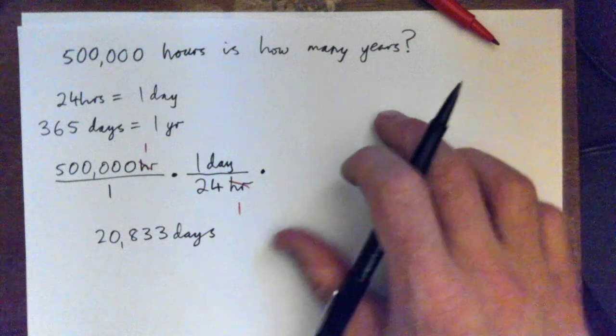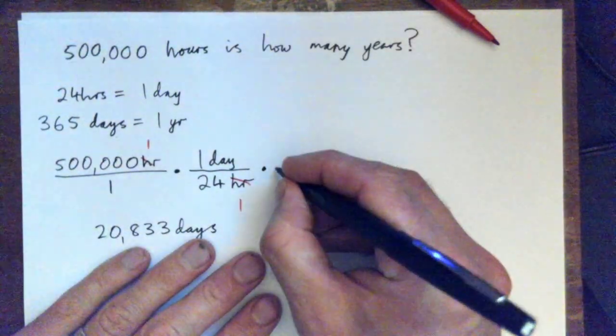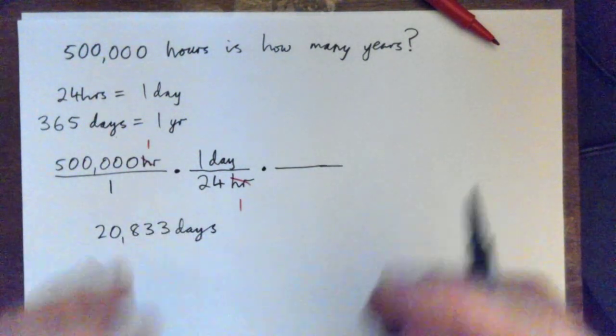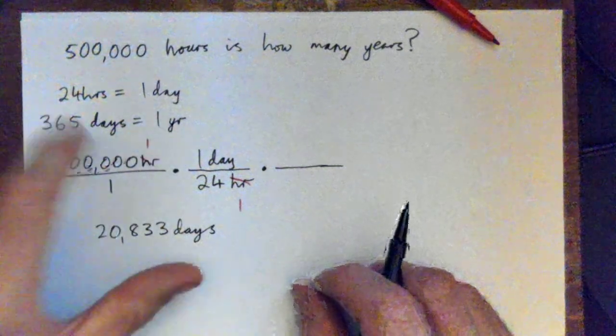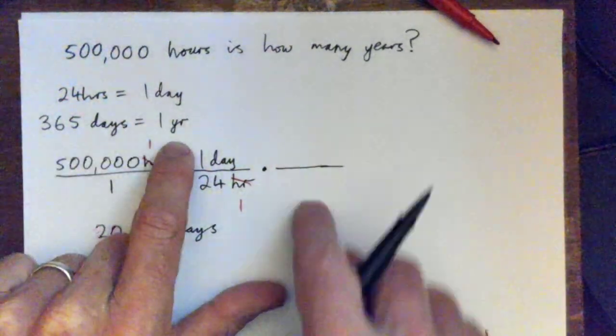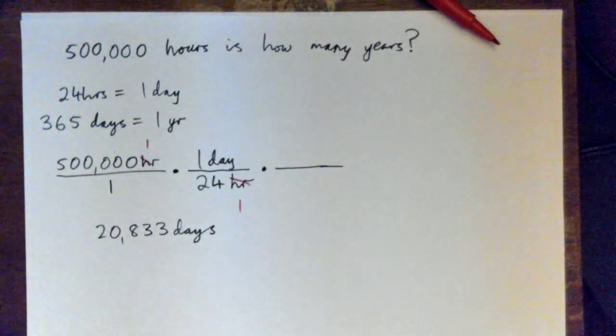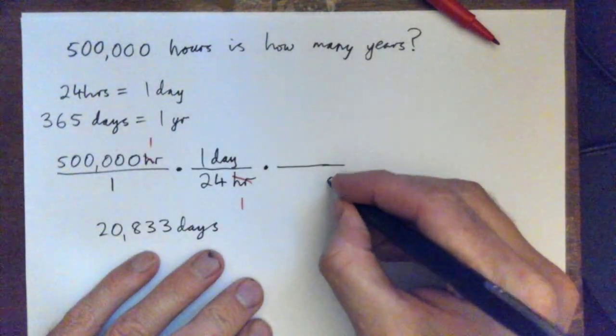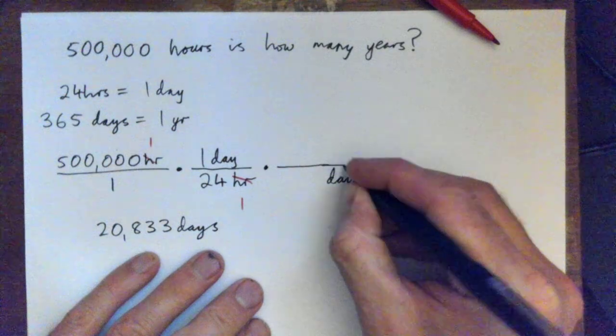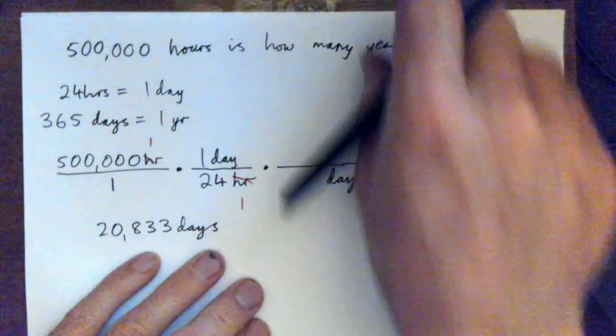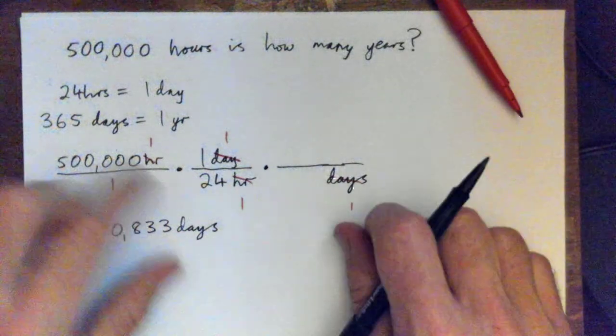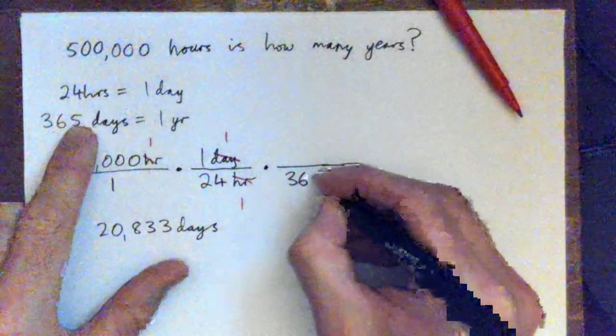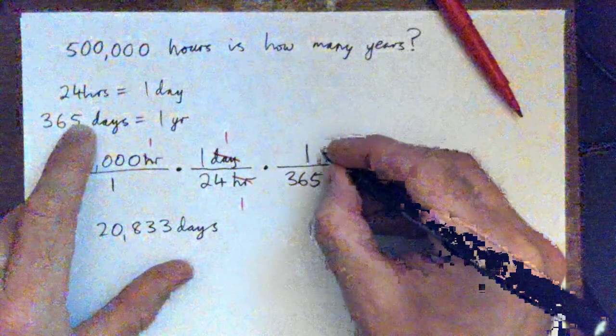So multiply that by something that gets us to years, because we can go from days to years. So what fraction should we put here? Right, then we want our days on the bottom, right? Because the days needs to cross cancel, right? They need to cross cancel. And we have this guy: we have 365 days equals one year, right?